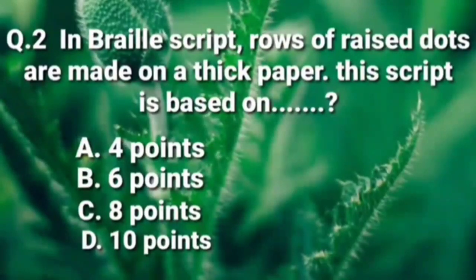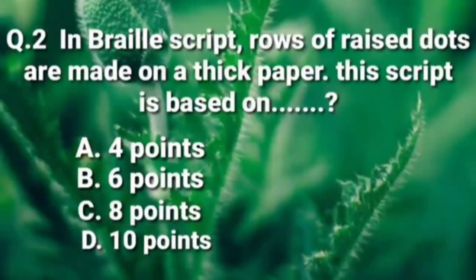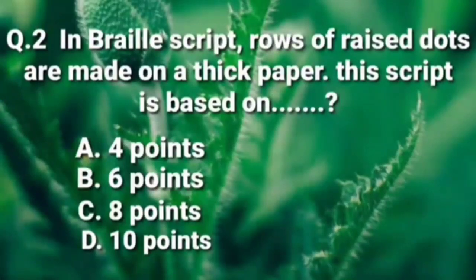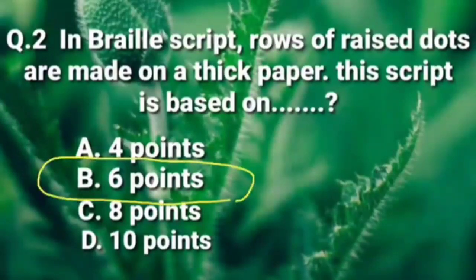We have NCRT lessons to help answer this easily. In Braille script, how many points are there? Option A is 6 points, option C is 8 points, option D is 10 points. The correct answer is option B, which is 6 points.